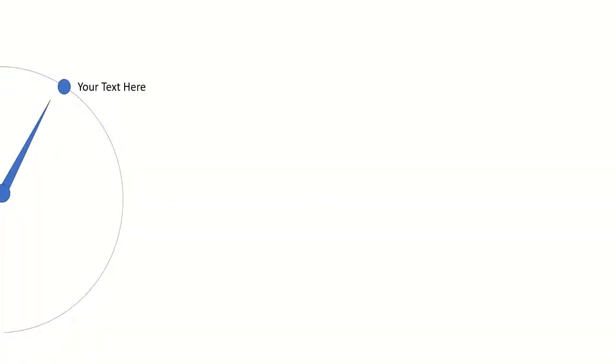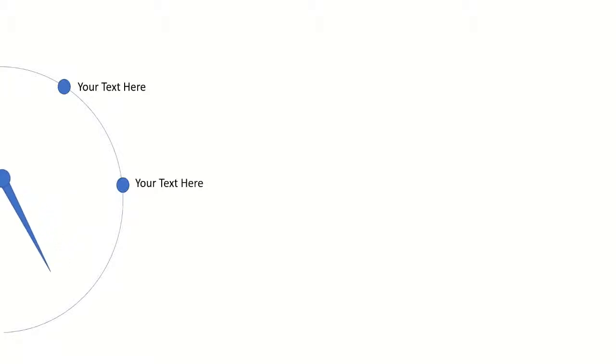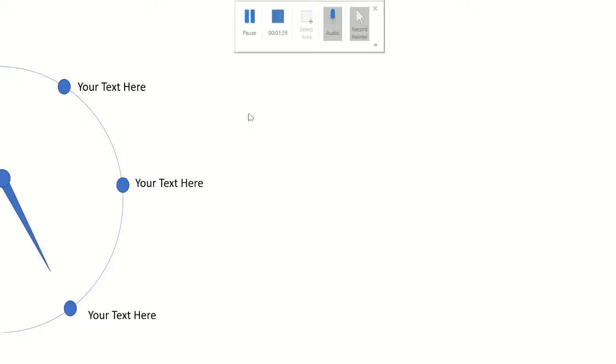Let's see in Slide Show mode how the animation works. The first text appears and initially the needle is pointed towards it. Then the needle moves to the next option and the second option appears, then to the third option and the third option appears. This is how you make a clock needle animation in PowerPoint — it really helps make your presentation look more beautiful. That was all from this video. I hope you liked it. Please like, share, and subscribe to the channel for more videos.